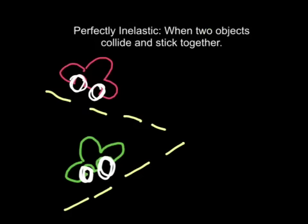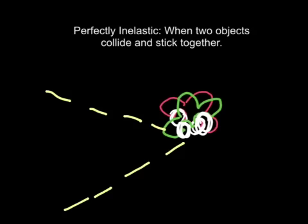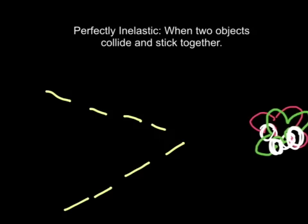The second type of collision that we want to think about is called the perfectly inelastic collision. This is when two objects collide and stick together. So if we imagine in a car accident, I have two cars going towards each other, they collide, and then they stick together. So they might continue sliding one way, but they're going to be stuck together.